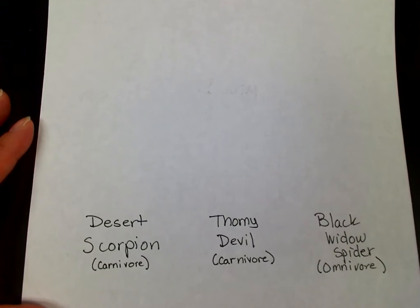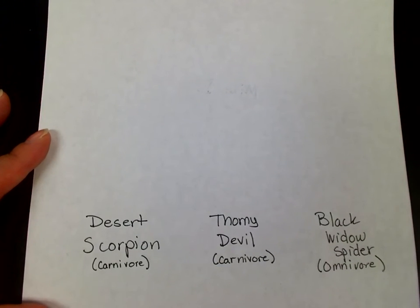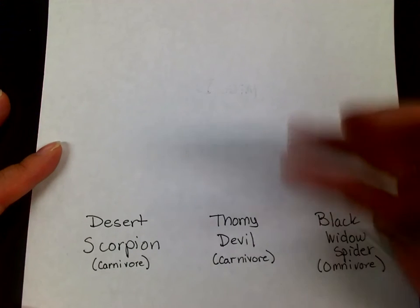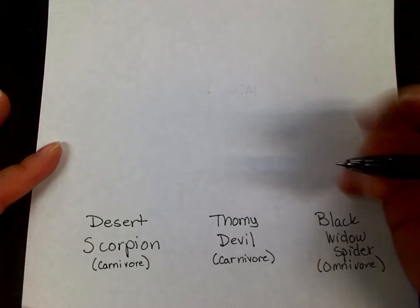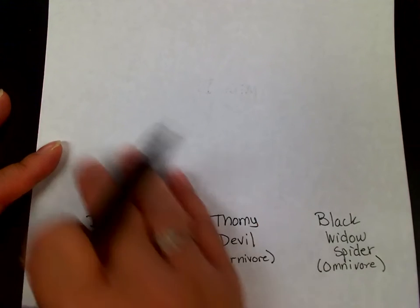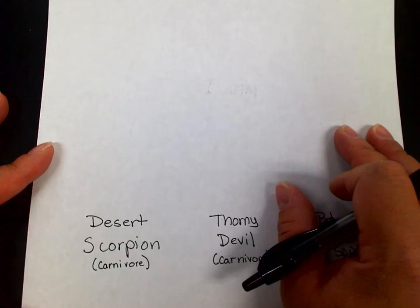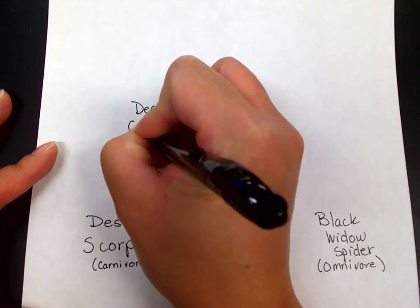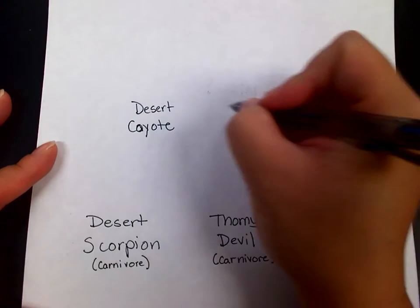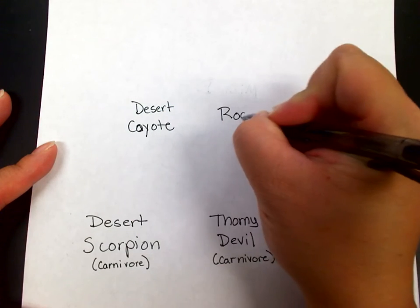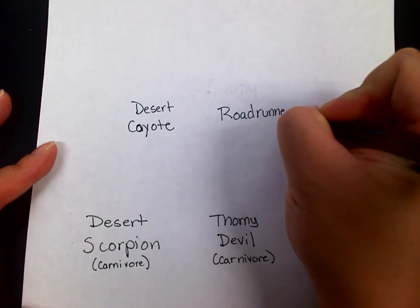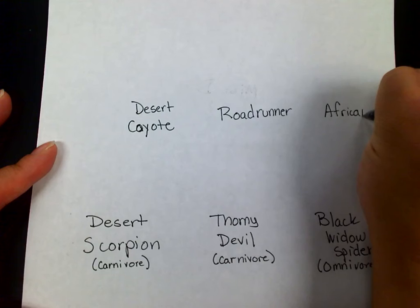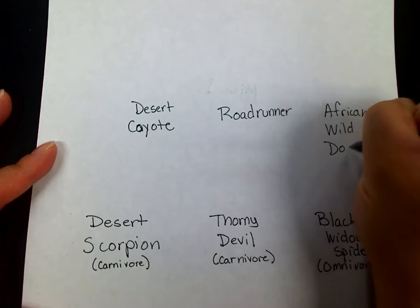If you decide to do a desert ecosystem, you are not allowed to use these organisms in your food web, because this is only for demonstration purposes. The next energy levels are our first and second level consumers, and here I'm going to put our third and fourth level consumers combined. I'm going to put down a desert coyote, in the middle a roadrunner, and then the African wild dog.